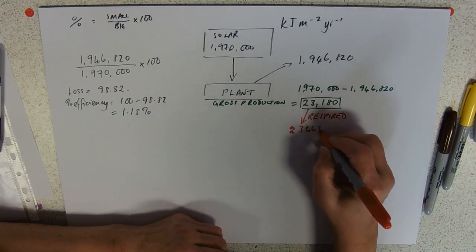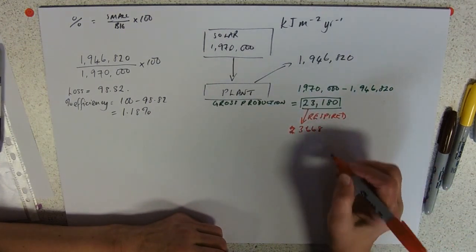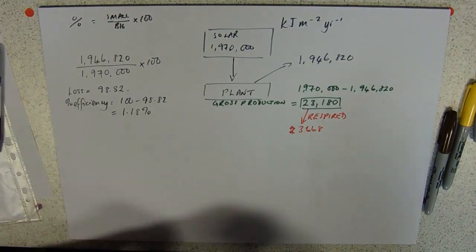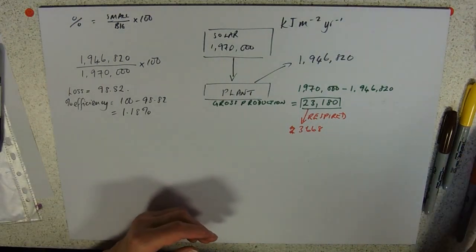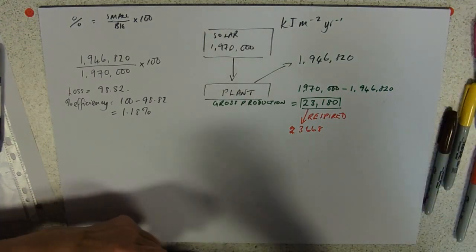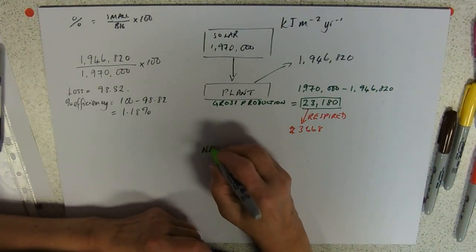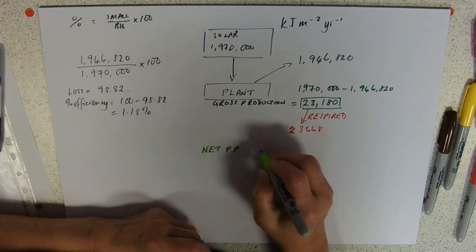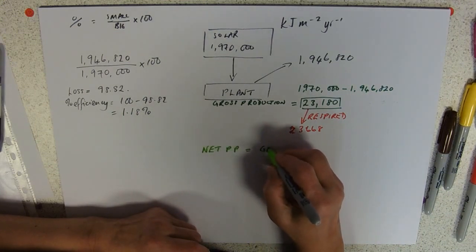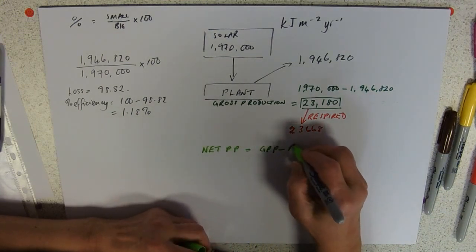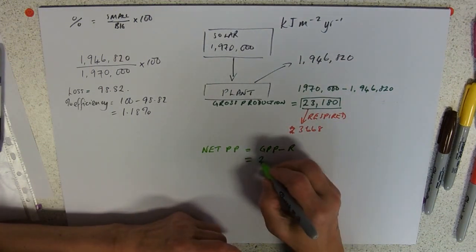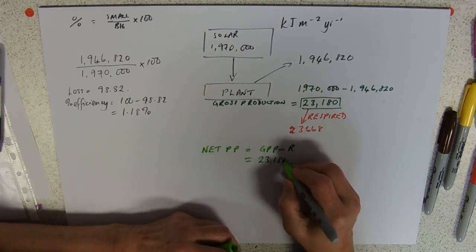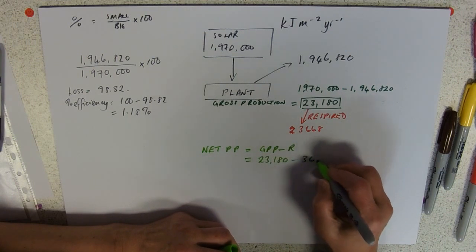In this case, 3,668, then we can work out the net production. How do we do that? So net production is GPP minus respiration. In this case, 23,180 minus 3,668.